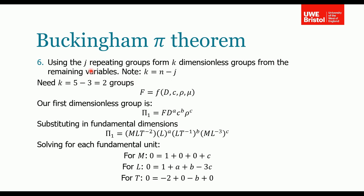We need to form k dimensionless groups where k equals n minus j. We had five variables and three fundamental dimensions, so we need two groups. The first dimensionless pi group, Pi₁, is some function of our dependent variable — force — and our repeating group: diameter, velocity, and density, each raised to unknown powers A, B, and C. We substitute in the fundamental dimensions for each term.